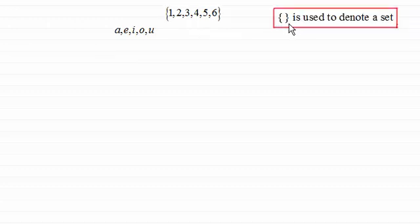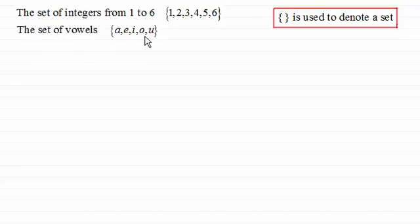Hi there. Now suppose we had a group of numbers, say the numbers one to six, or the letters that are the vowels of the alphabet. In mathematics we tend to call these groups sets, and we use curly brackets to denote a set. So we put them round the group of numbers that we've got. So we would call this the set of integers from one to six, and this the set of vowels.